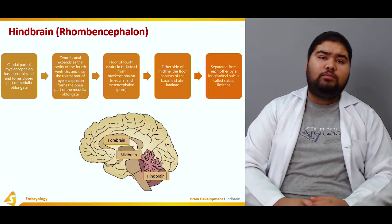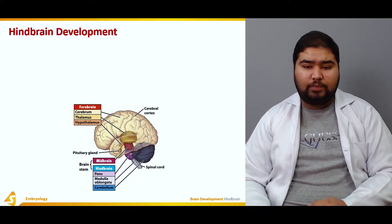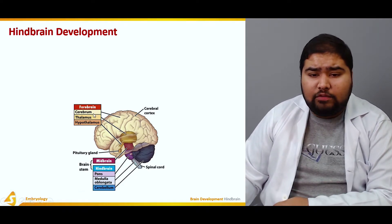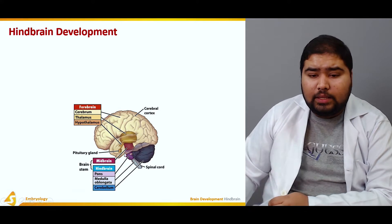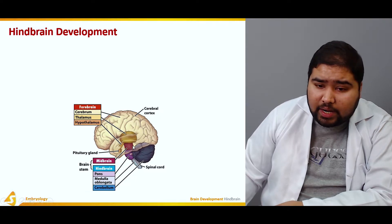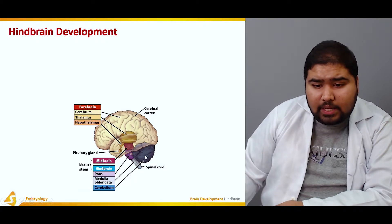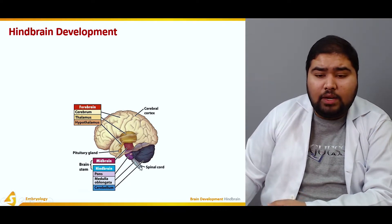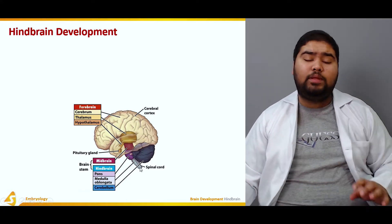Looking again at the figure of the adult brain: this is the cerebral cortex and forebrain showing the cerebrum, thalamus, and hypothalamus. Then we have the brainstem, which consists of the midbrain shown in brown. The hindbrain consists of the pons and cerebellum, which arise from the metencephalon, and the medulla oblongata shown in light blue, which arises from the myelencephalon.